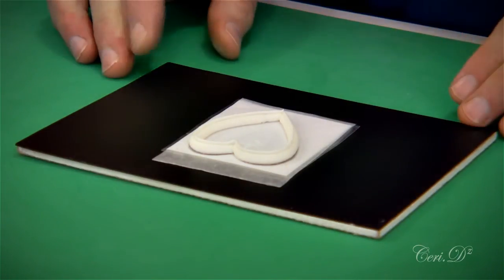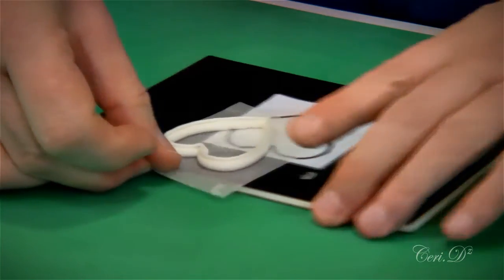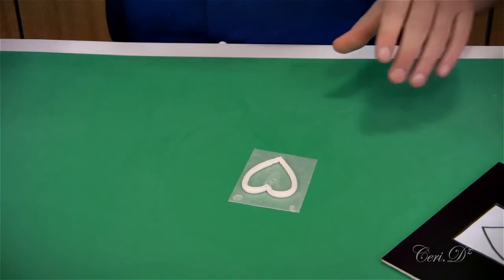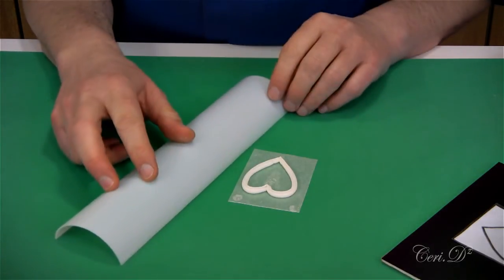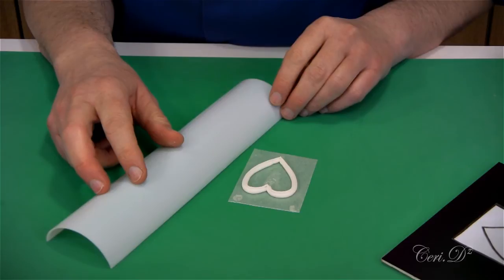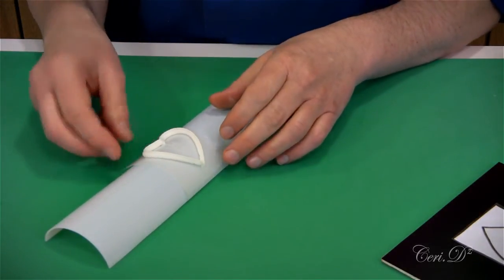Once that's been piped, before it dries or crusts, I will take it off its template. I will then take one of these formers. This could be a cardboard roll or part of a drainpipe, as long as it's food safe. I then take my heart and lay it over the top to dry.